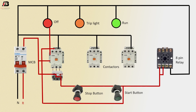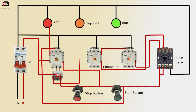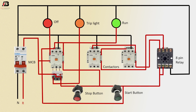Phase connection outgoing from contactor NC point and connect to off indicator. Phase connection outgoing from NO point to switch connection. Phase connection outgoing from NO point to relay connection. Phase connection outgoing from contactors to another contactor NO point. Phase connection outgoing from another NO point to relay. Phase connection outgoing from overload relay to trip light indicator. Phase connection outgoing from contactor and connect to run indicator, and NO point coil connection to magnetic contactor NO point.